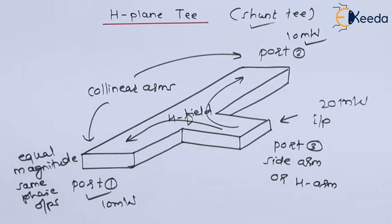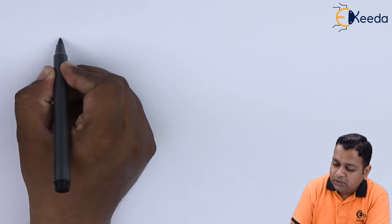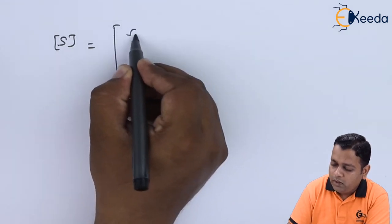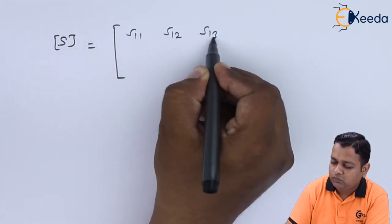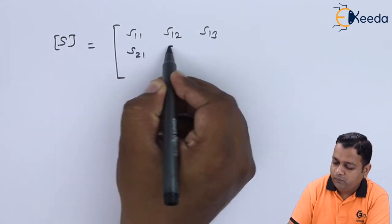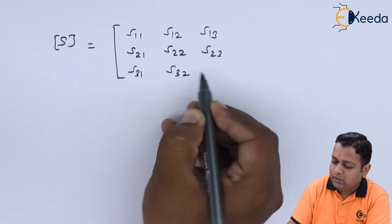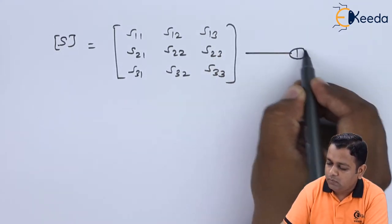After understanding the behavior of H-plane T, we shall derive the corresponding scattering matrix. H-plane T has a total of 3 ports, so the scattering matrix will be of order 3×3. The generalized representation: matrix S equals first row S11, S12, S13; second row S21, S22, S23; third row S31, S32, S33. This is equation number 1.